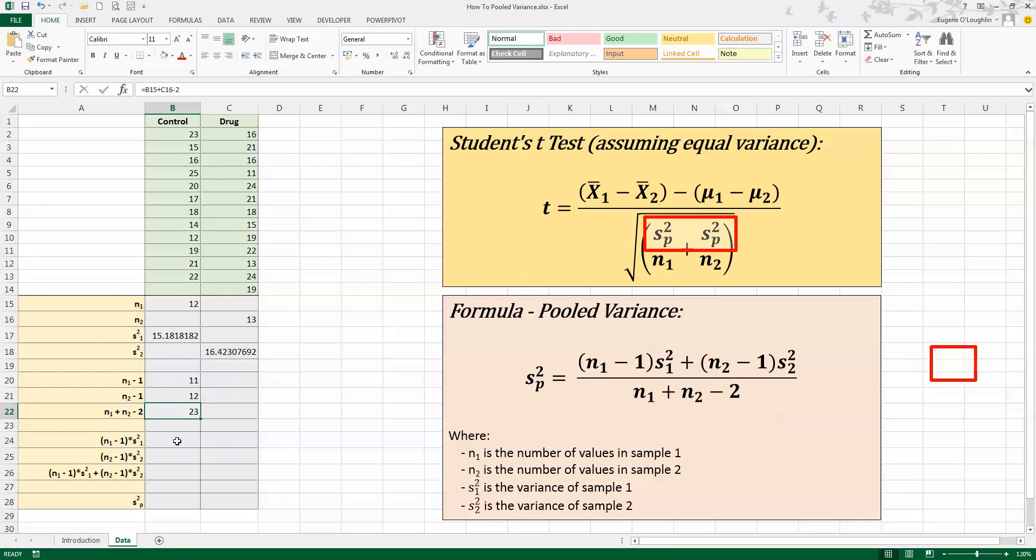Now let's go up and build the numerator at the top. In cell B24 here I've got the N1 minus one and I want to multiply that by the variance of sample one. So I've calculated N1 minus one already so there it is it's 11 multiplied by the value for the variance of sample one and press enter. Similarly I do the same for N2 minus one multiplied by the sample variance of the drug treated group. So this is equal to N2 minus one multiplied by the variance of sample two and press enter.